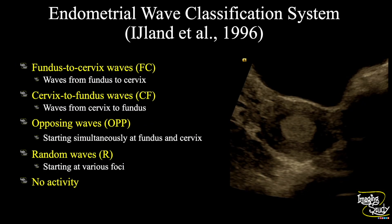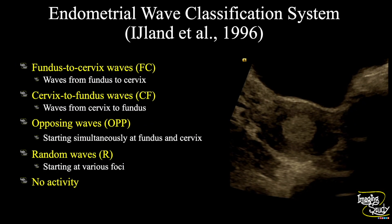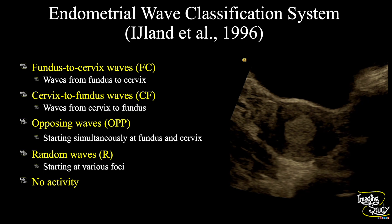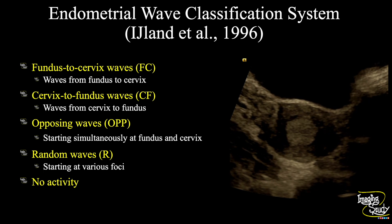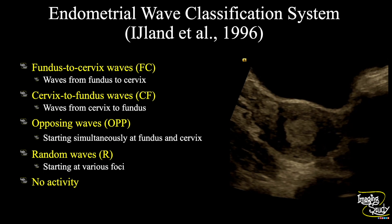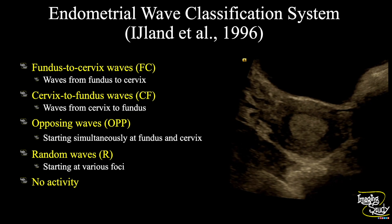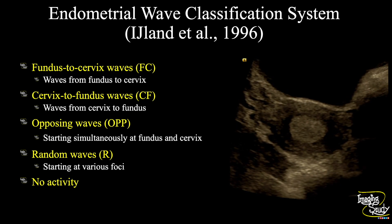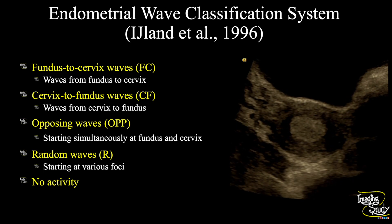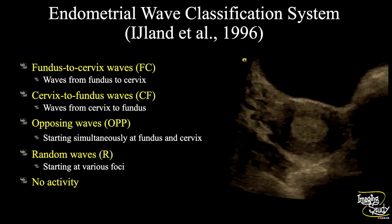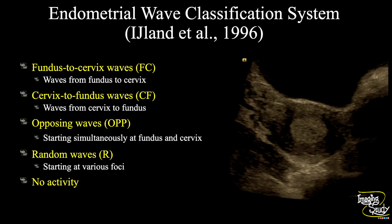We have five different types of wave classification: from fundus to cervix, cervix to fundus, opposing waves that start simultaneously at the fundus and cervix, random waves which start from various foci, and no activity.